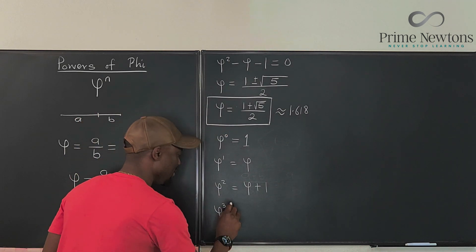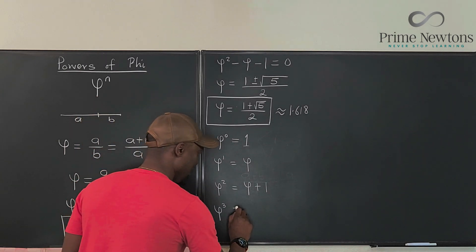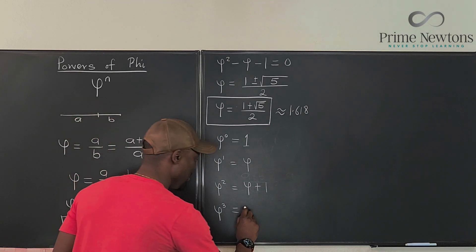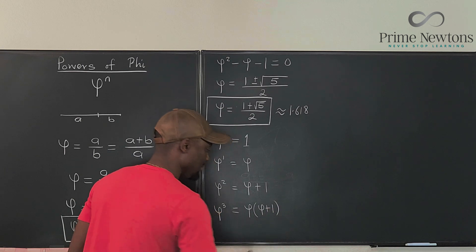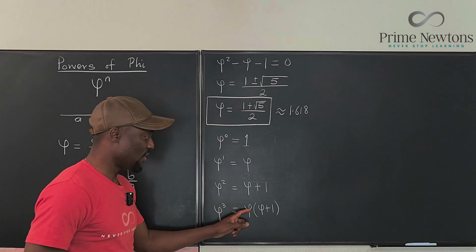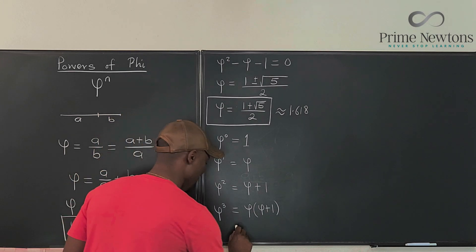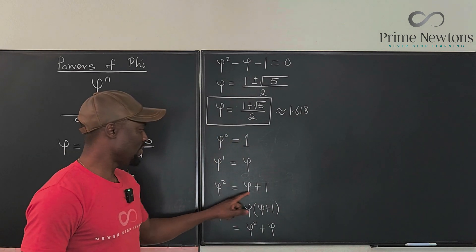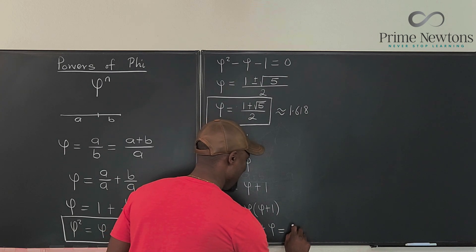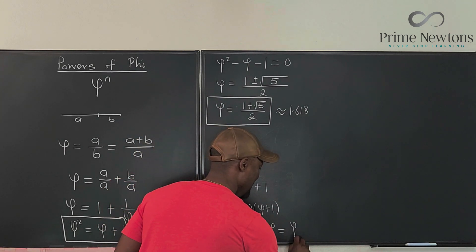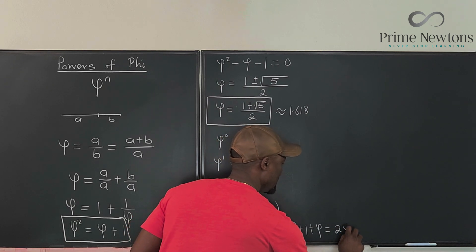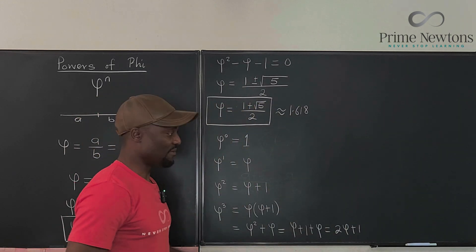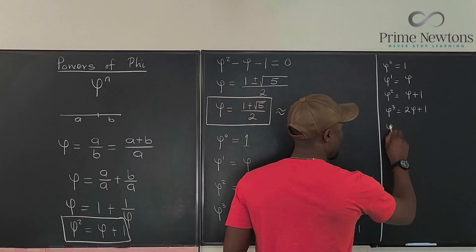What about phi cubed? We know phi cubed is phi times phi squared, so it's phi times (phi plus one), which expands to phi squared plus phi. But phi squared is phi plus one, so we get (phi plus one) plus phi, which gives us 2phi plus one.